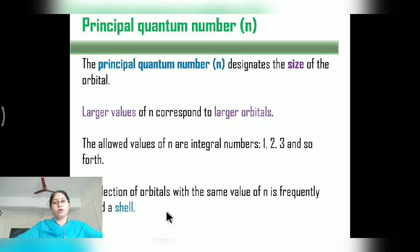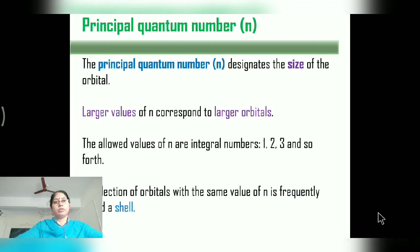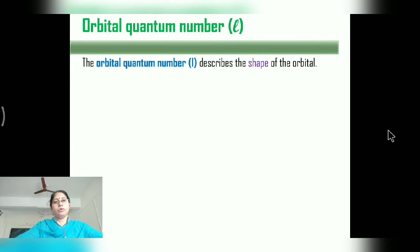For orbitals whose value of N is the same, we call them a shell. Now let us look at the Orbital Quantum Number. It describes the shape of the orbital.